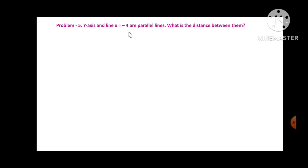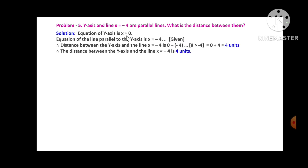Problem 5: The y-axis and the line x = -4 are parallel lines. What is the distance between them? The equation of the y-axis is x = 0, and the given line is x = -4. The distance between them is 0 - (-4) = 0 + 4 = 4 units. Therefore, the distance between the y-axis and the line x = -4 is 4 units.